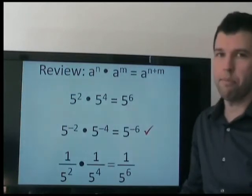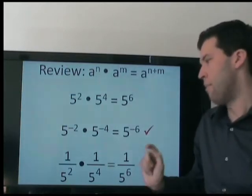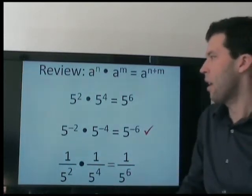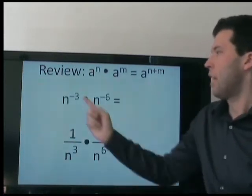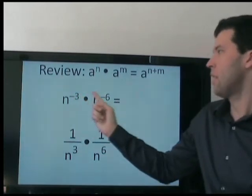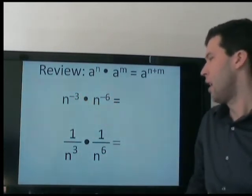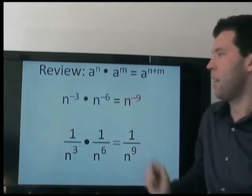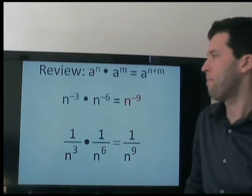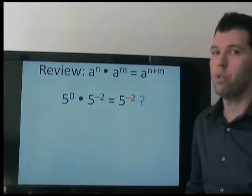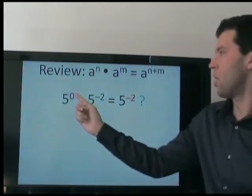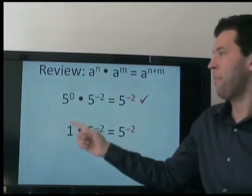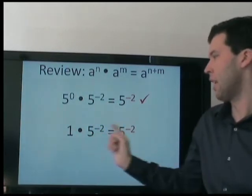We can see this by rewriting them using positive exponents. And remember that when we multiply fractions, we multiply straight across. So again, using our rule: negative 3 plus negative 6 is negative 9. That makes sense — total, we are dividing by n nine times. What about for an exponent of 0? Do we still add? Yes. 0 plus a negative 2 is negative 2. This makes sense — this is 1, and anything times 1 is itself.